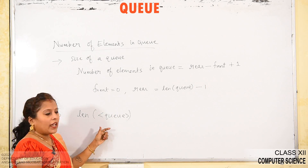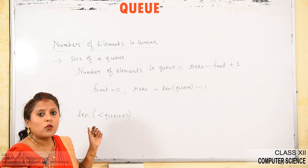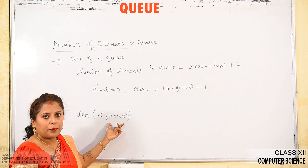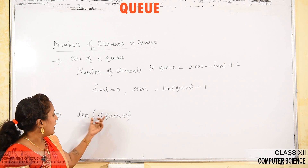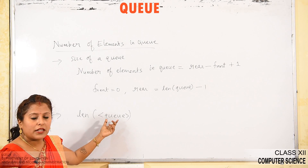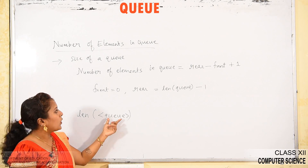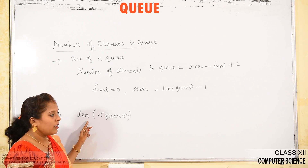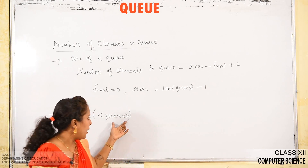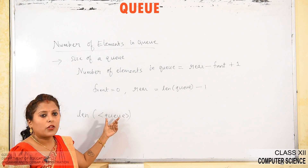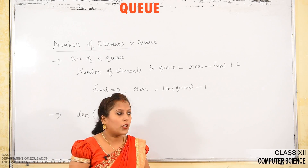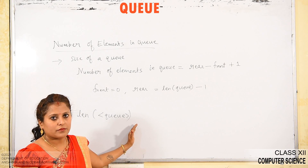The same can be done using the Python built-in len() function. len(Q) — where Q is the list name — gives the size of the queue, that is how many elements are present. You can find the number of elements either using the formula rear minus front plus 1, or using the len() function.